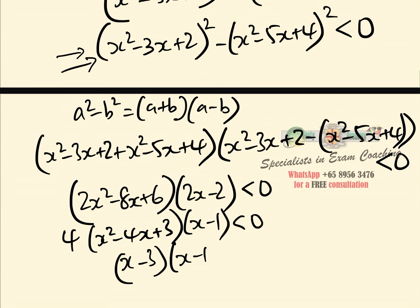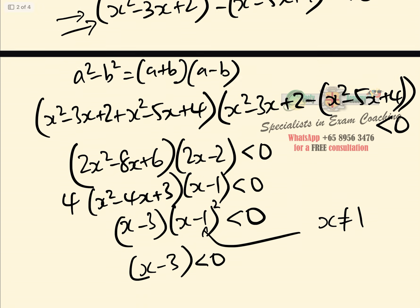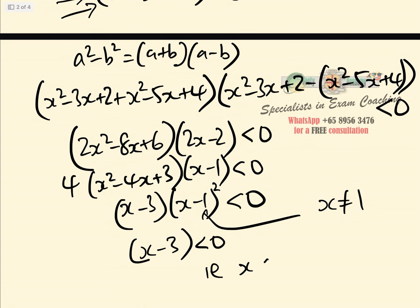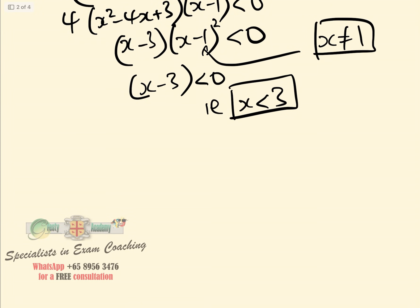This simplifies to 4(x squared minus 4x plus 3)(x minus 1) less than 0, i.e. (x minus 3)(x minus 1) squared less than 0. Since (x minus 1) squared is always greater than or equal to zero, we must exclude x equals 1. All that remains is x minus 3 less than 0, i.e. x less than 3. So the answer is x less than 3, x not equal to 1. That's Method 2.